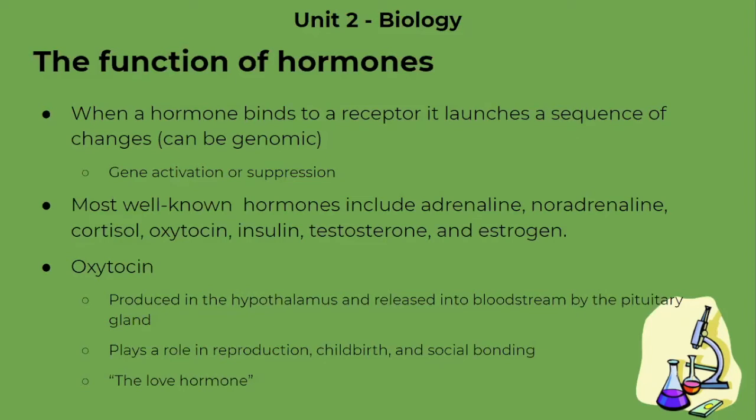We don't need to know much specifics about that because we are learning about psychology, not biology. Basically, all you need to know is that the binding will cause a series of changes which will change transcription, translation, and then result in a gene change — a gene will be expressed or suppressed. The most well-known hormones include adrenaline, noradrenaline, cortisol (a stress hormone), oxytocin (known as the cuddle hormone), insulin, testosterone, and estrogen.